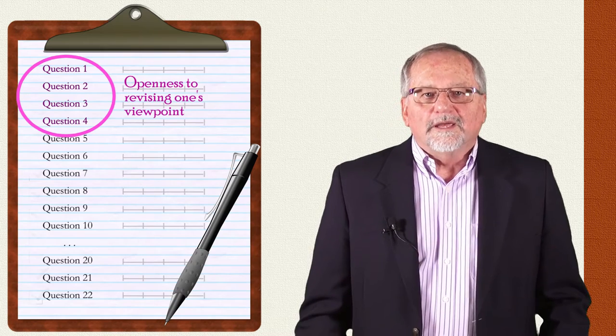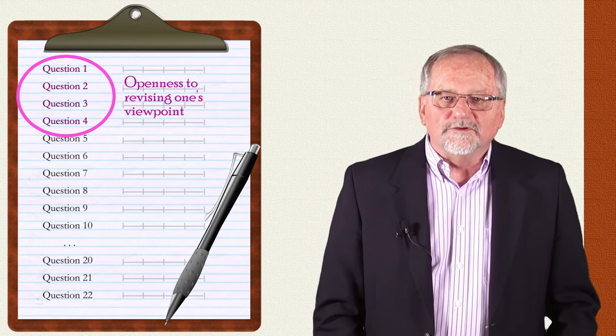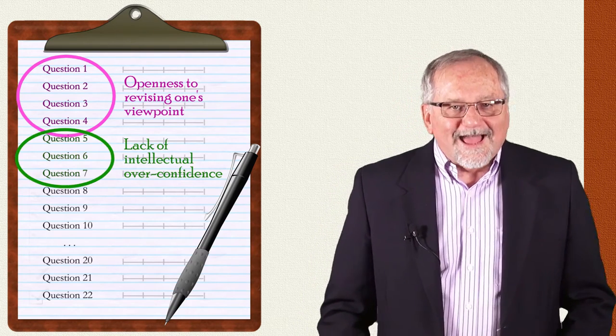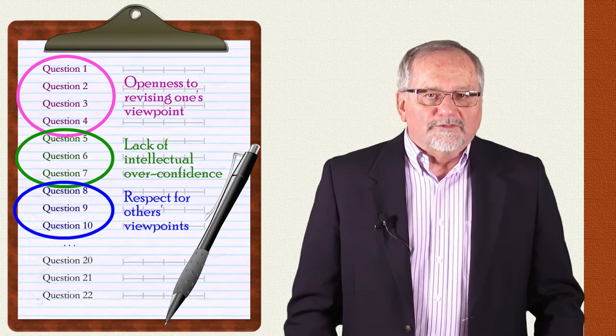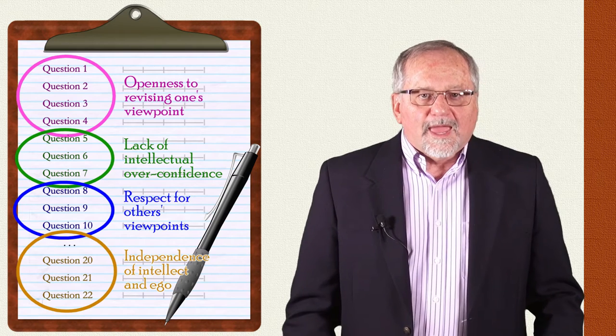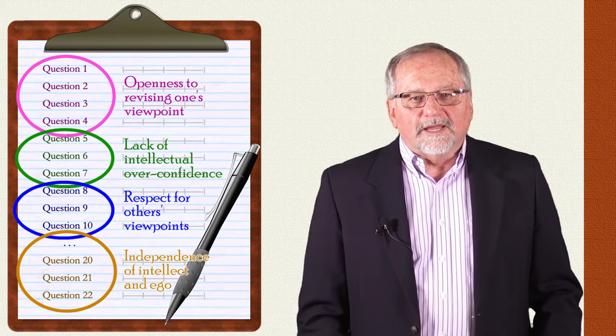The four subscales of the Comprehensive Intellectual Humility Scale are: openness to revising one's viewpoint, a lack of intellectual overconfidence, a respect for others' viewpoints, and an independence of intellect and ego.